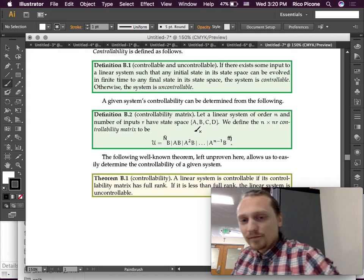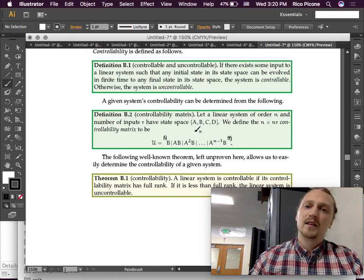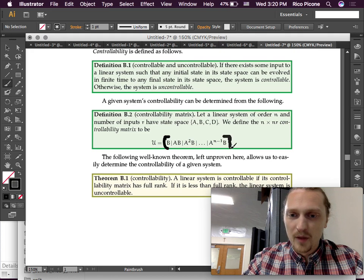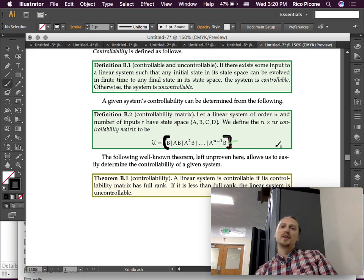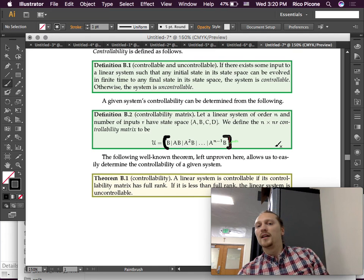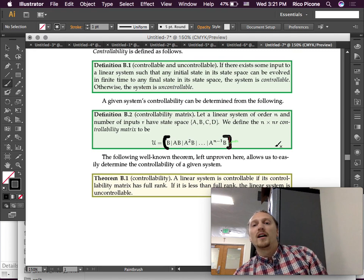A given system's controllability can be determined from the following. So, there's this thing called the controllability matrix. I'm using the big marker to smudge out the silly stuff, but that's just a matrix. So, the linear system of order N and number of inputs R have the state space model ABCD. We define the N by NR. So, the NR, R is the number of inputs and N is the order of the system. N rows and then N times R columns. The controllability matrix is this, and we use the script U as the controllability matrix.